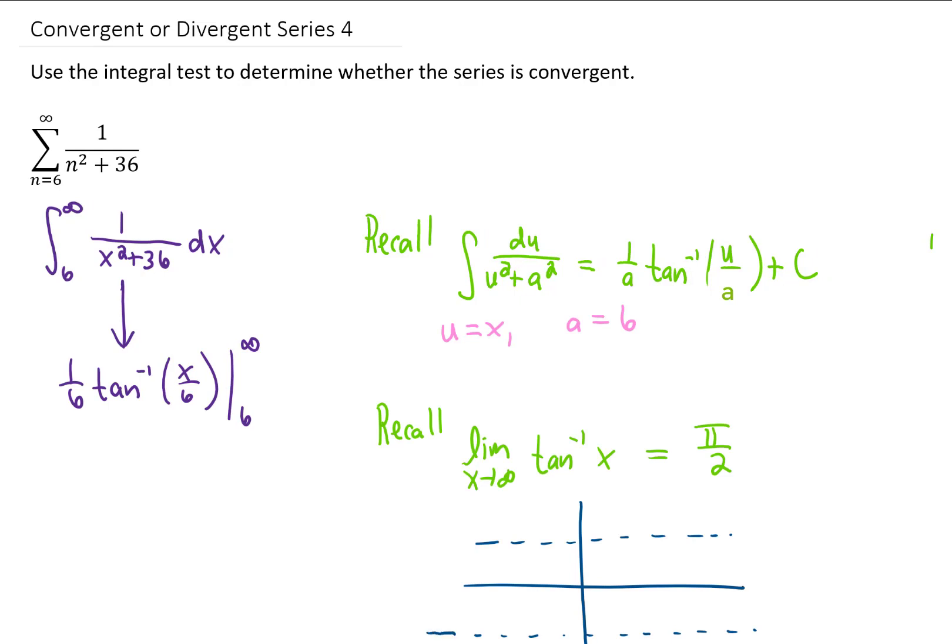To complete this problem, we need to plug in our limits, and that requires that we know what the limit of an inverse tangent function is as its argument goes to infinity. Well, the graph looks like this, so you can see that as x goes to infinity, the value of the function goes to pi over 2.